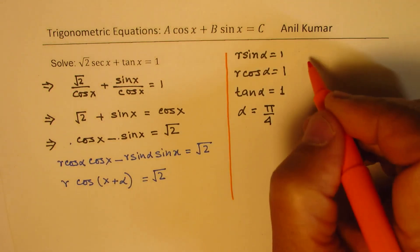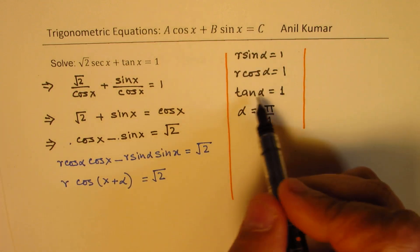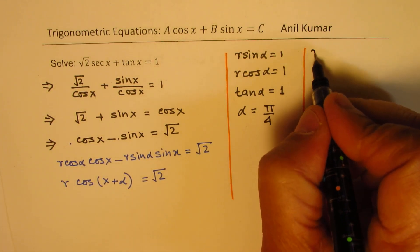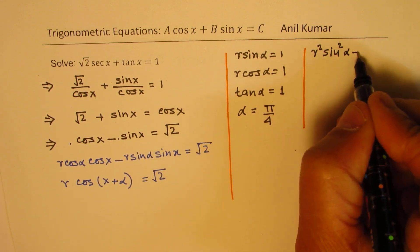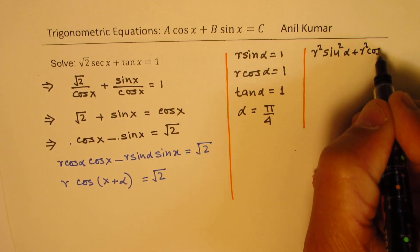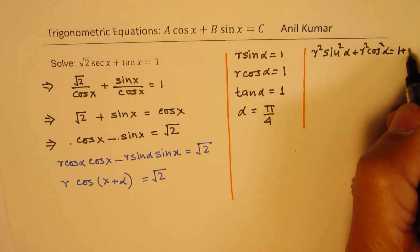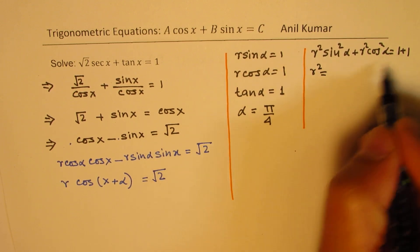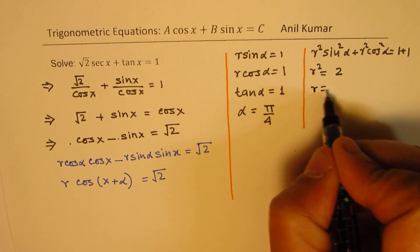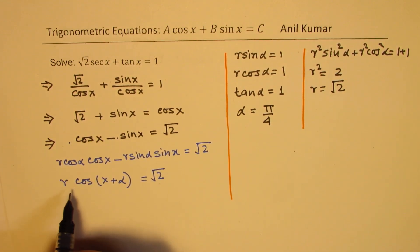Second thing about this substitution is that the value of r, if we add square of these terms, we get r square sin square alpha plus r square cos square alpha equals to 1 plus 1, which is 2. So from here, we can write down that we have square root of 2 for r.